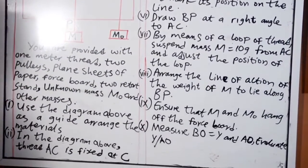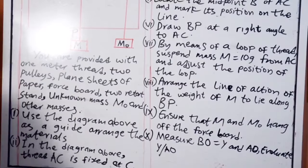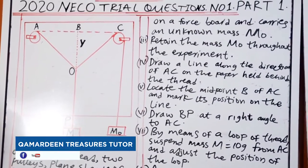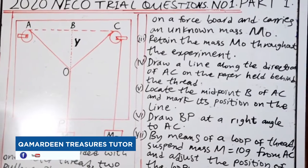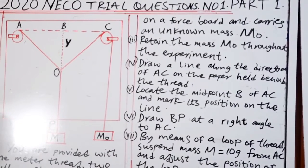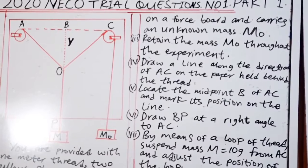One: Use the diagram above as a guide. Arrange the materials. In the diagram above, thread AC is seized at T on a force board and carries unknown mass MO. Retain the mass MO throughout the experiment.